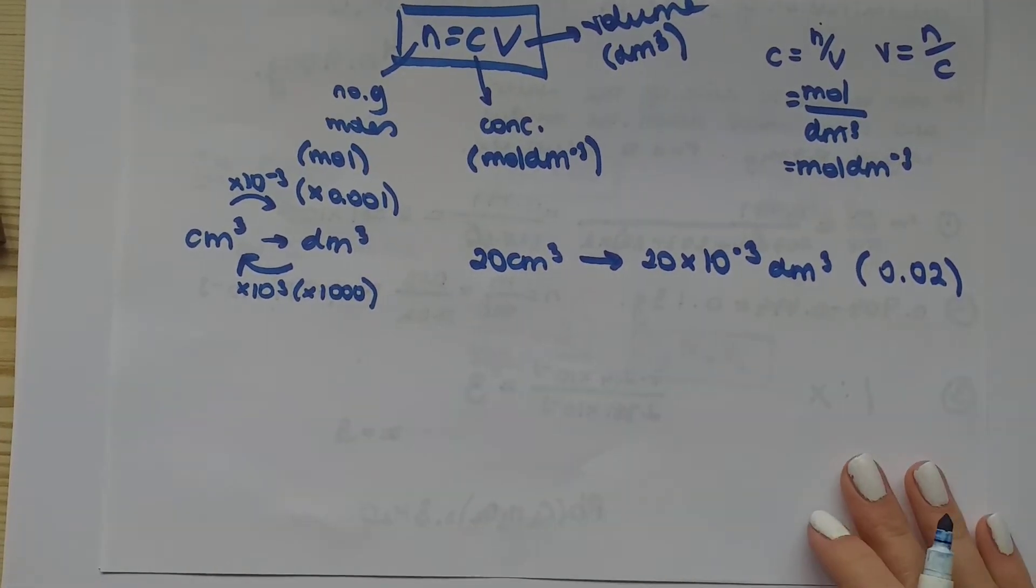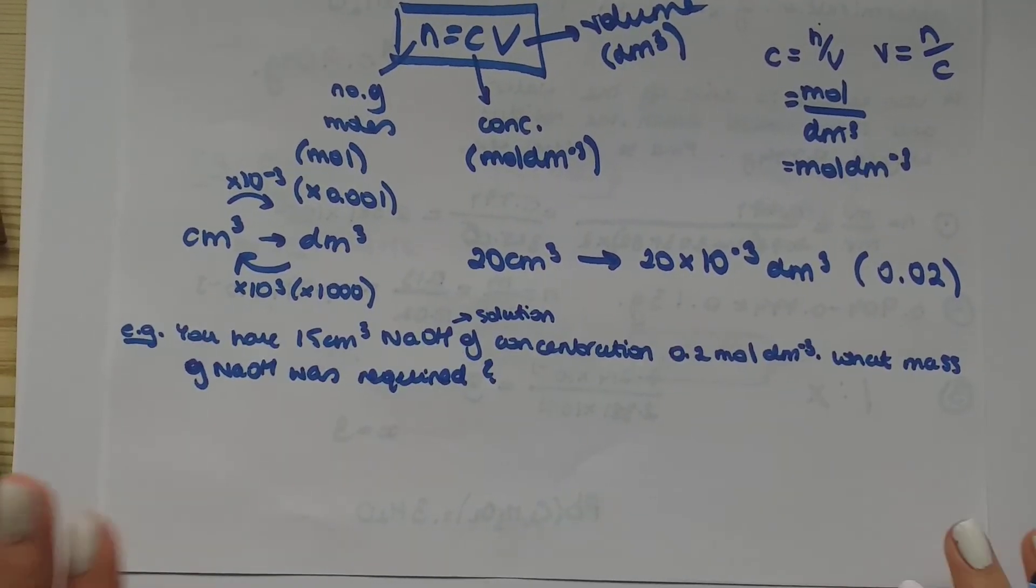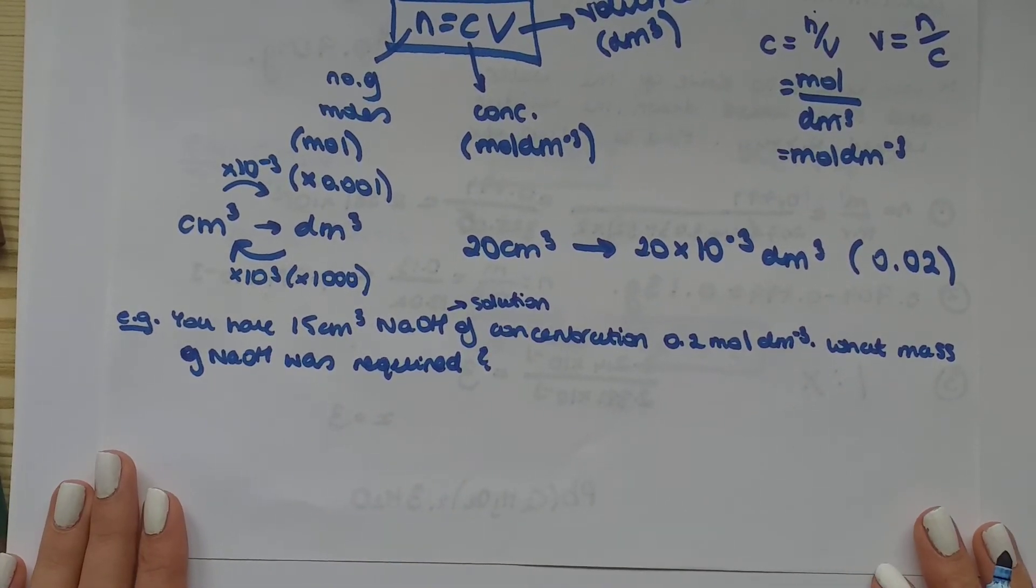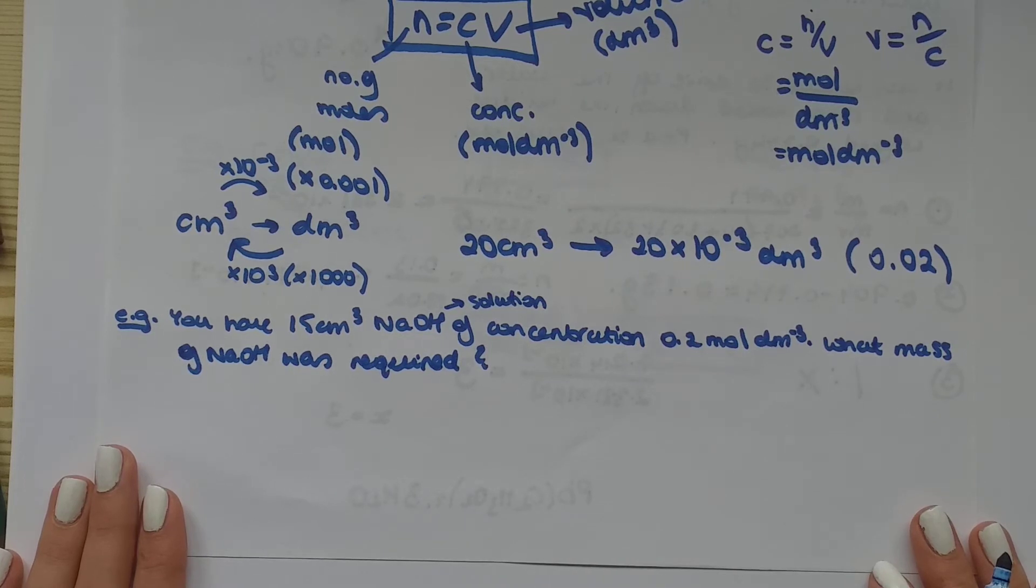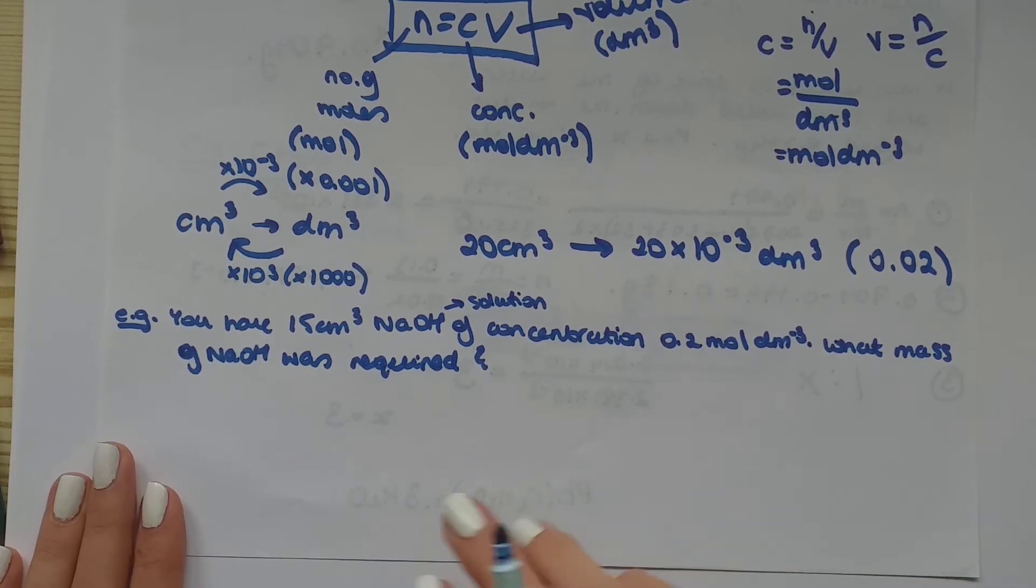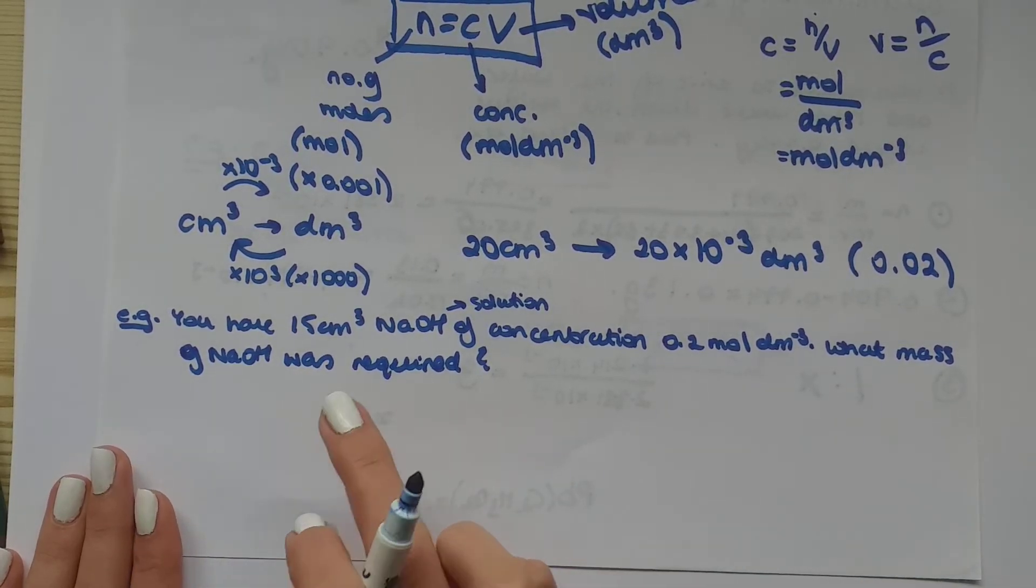Now let's make an example. The example I gave you here is that you have 15 centimeters cubed of NaOH solution, which has a concentration of 0.2 moles dm minus 3. And now we have to find the mass of NaOH sodium hydroxide that was required.